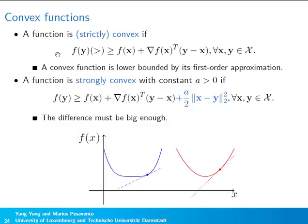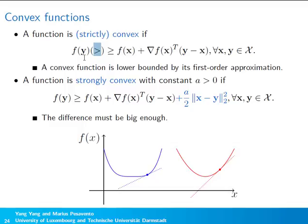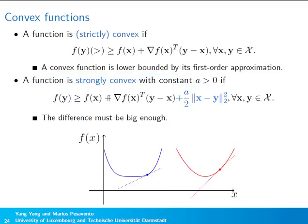Let us briefly review convexity concepts. A function is convex if f(y) ≥ f(x) + ∇f(x)^T(y-x) for any two points x and y — i.e., the function is always above its first-order approximation. If strict inequality holds for any two distinct points, the function is strictly convex. A function is strongly convex with constant a > 0 if the difference between f(y) and its first-order approximation is at least (a/2)||y-x||^2.